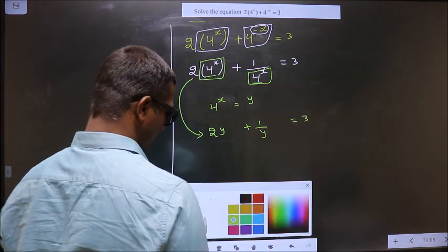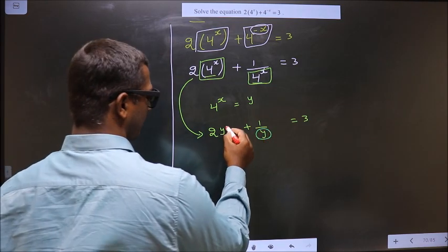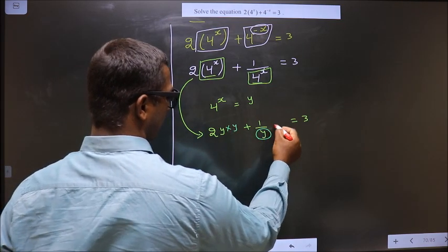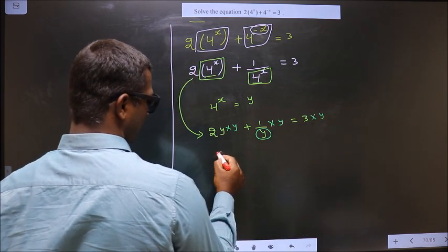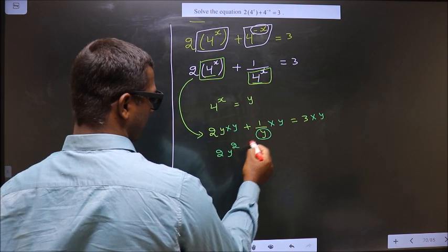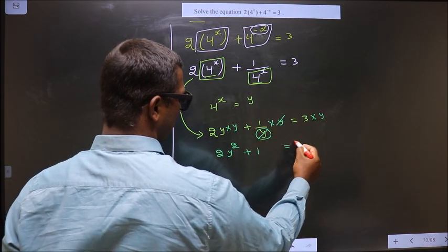get 2y^2. Here it cancels out, you get plus 1 equals 3y.